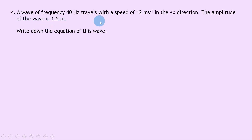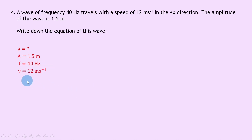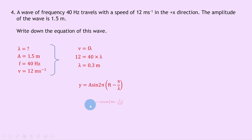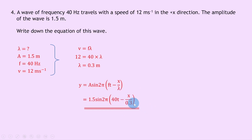Question 4 says a wave of frequency 40 hertz travels at 12 metres per second in the positive x direction, with amplitude 1.5 metres. Write down the equation of this wave. We don't know the wavelength, so we calculate it first. Using v equals f lambda: 12 equals 40 times lambda, so lambda equals 12 divided by 40, giving 0.3 metres. Then using y equals A sine 2 pi times ft minus x over lambda, we get y equals 1.5 sine 2 pi times 40t minus x over 0.3. Equivalently, you could write 40t minus 3.3x, since 1 divided by 0.3 is 3.3.